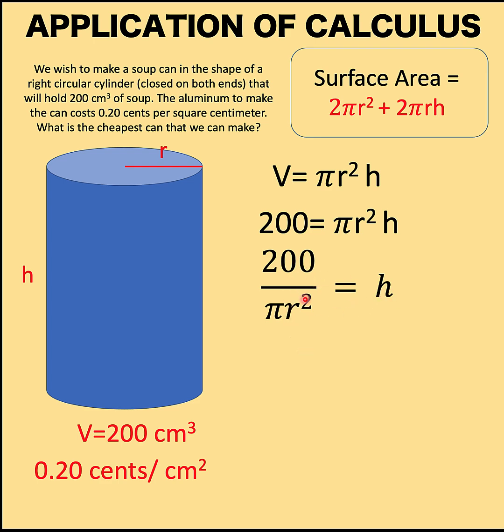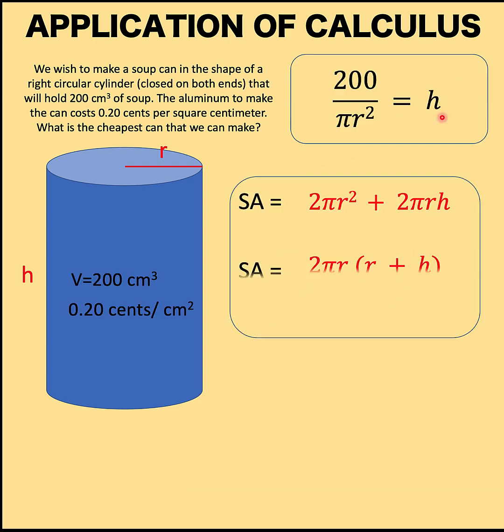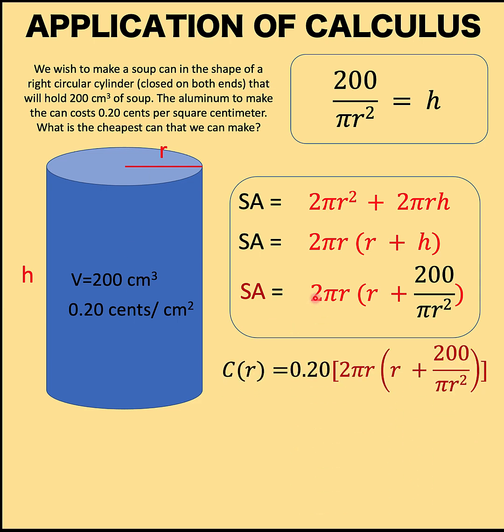Now, let's substitute this value for h to this formula of the surface area. So, what we now have is surface area equals 2πr times the quantity (r + 200/πr²). Here, we just factor out the common factor 2πr to arrive at the second line here. This is the total surface area of the aluminum that is needed in order to create this can. And the cost of that aluminum is 0.20 cents per square centimeter. So, let's multiply now the surface area by 0.20 to get our cost function in terms of the variable r or the radius.